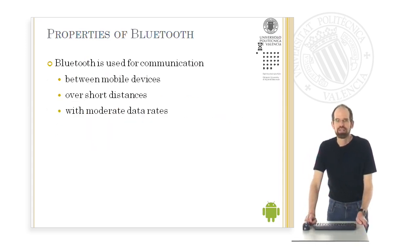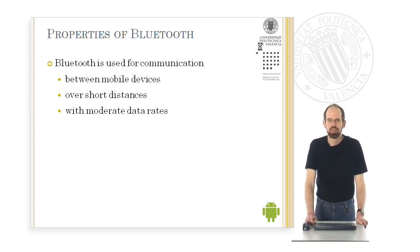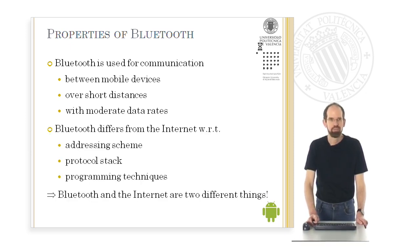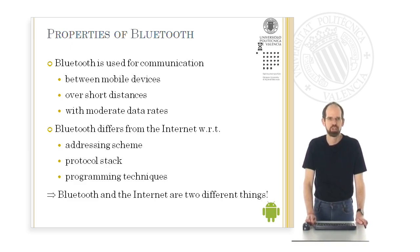Bluetooth is used for communication between mobile devices over short distances with only moderate data rates. Bluetooth differs from the internet in multiple respects: with respect to the addressing scheme, the protocols used, and the programming techniques employed. So it's important to understand that Bluetooth and the internet are two different things.